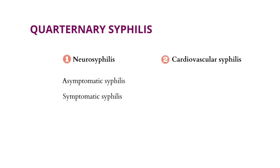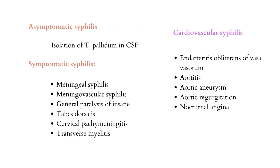Neurosyphilis can be of two types: asymptomatic neurosyphilis and symptomatic neurosyphilis. Asymptomatic neurosyphilis means the patient would not show any symptoms. But if we test the CSF, the CSF biochemistry would reveal Treponema pallidum in the CSF, though there are no neurological signs present.